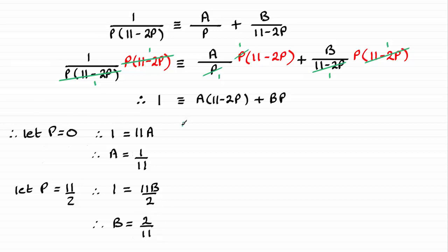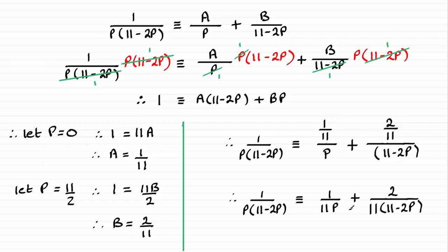So all I need to do now is just substitute these values for A and B back into here. If you do that, you'll get the fractions on the top here. Hopefully you'll avoid this line, and you'll just see that by multiplying top and bottom of each of these fractions by 11, that you get this result here.